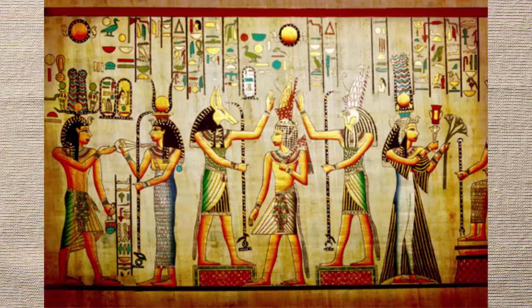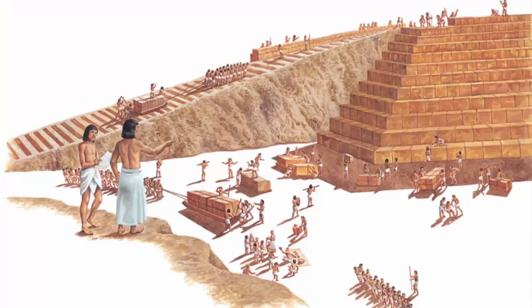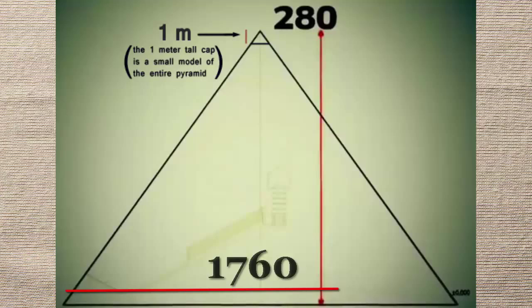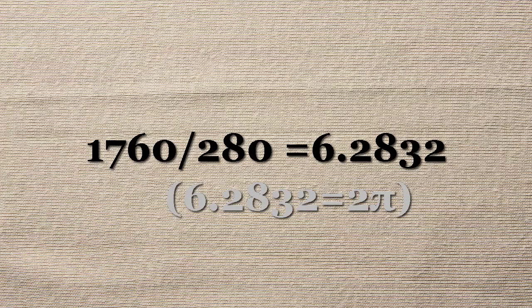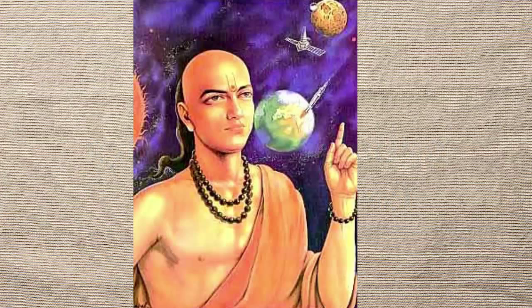It is believed that the ancient Egyptians had the knowledge of pi and used it in pyramid constructions. Their estimated pi is 3.1416. The great pyramid at Giza has a perimeter of about 1760 cubits and a height of about 280 cubits. The ratio 1760 divided by 280 is approximately equal to 6.2832, which is 2 times pi. In India, Aryabhatta, in 500 BC, succeeded in approximating the pi value up to 4 digits: 3.1416.